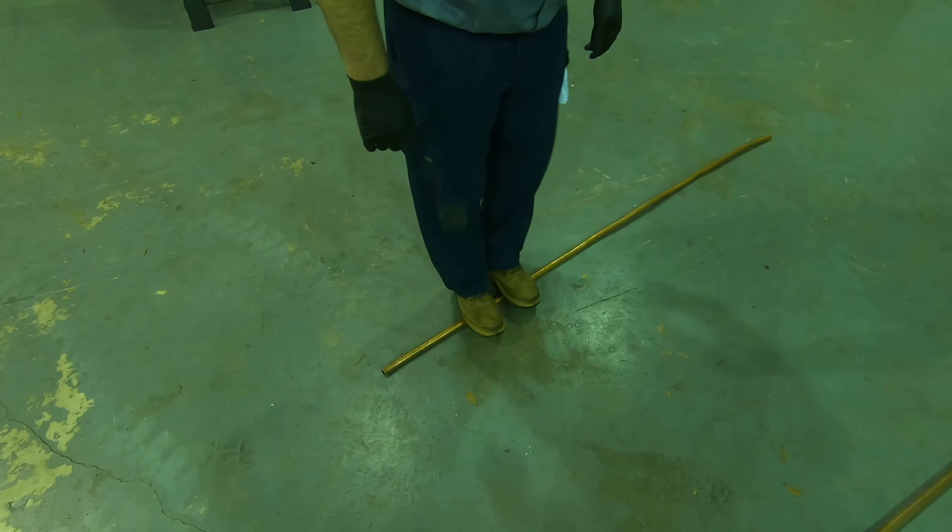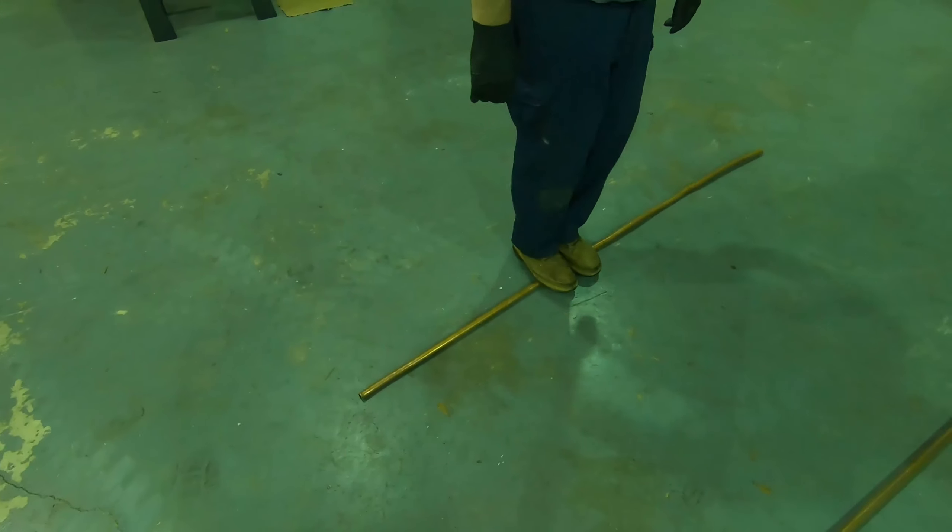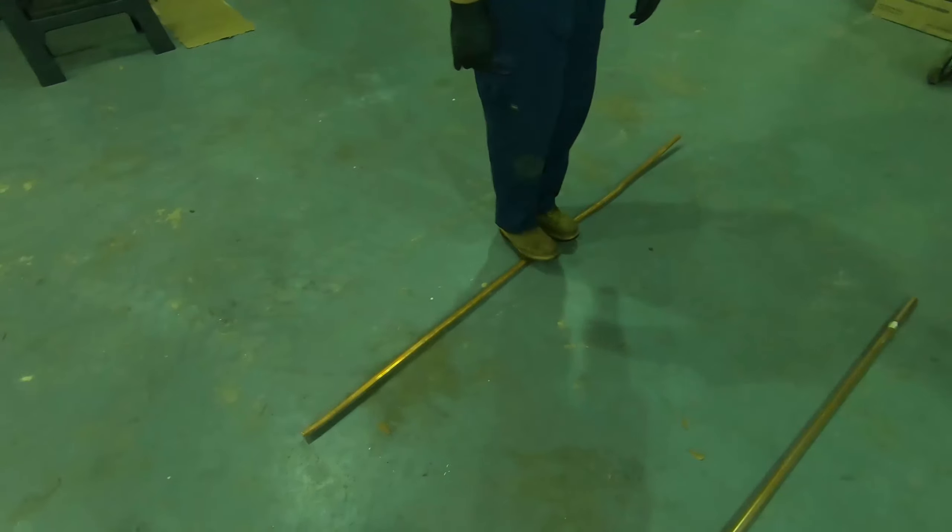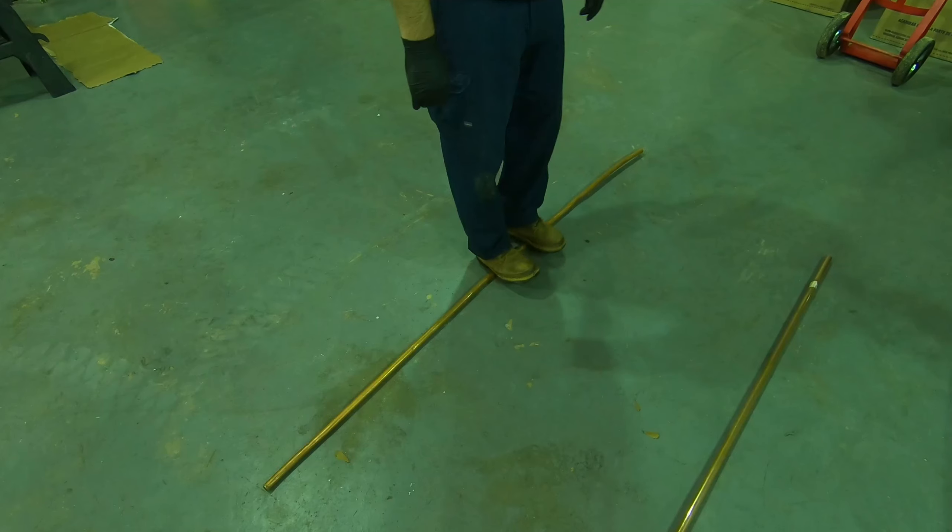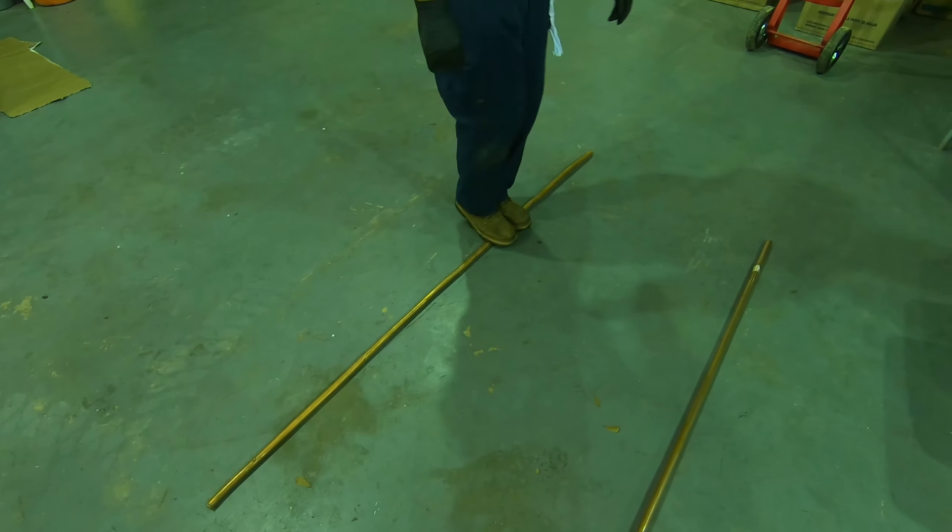But I'm going to show you a way you can straighten out soft copper and it'll look just like hard copper. The idea is to get it as straight as possible.